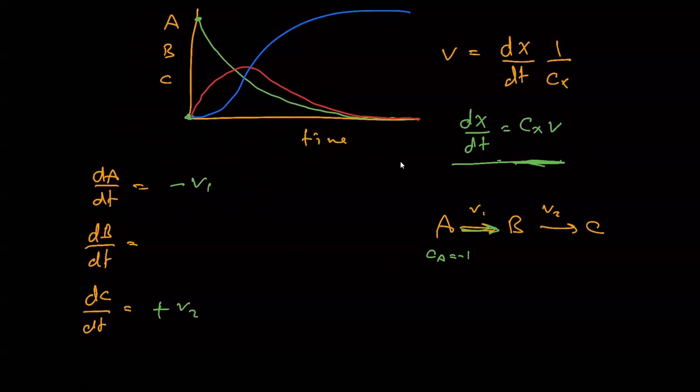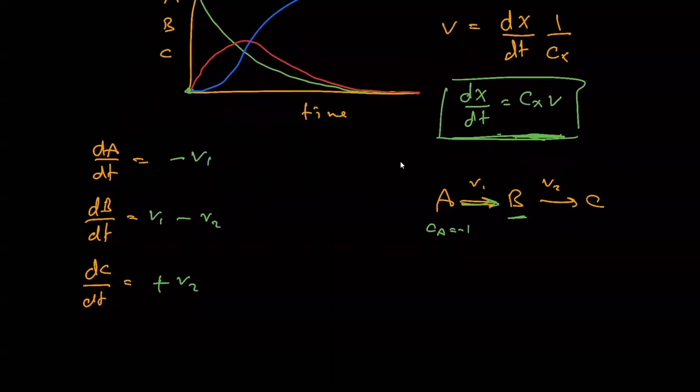What about B? This is where it gets more interesting. B is actually being made at a rate V1, and it's disappearing at a rate V2. You can get this equation by considering this as well, but it becomes second nature. After maybe a few seconds, you'll realize that it's quite straightforward to write the differential equations in terms of these rates for any network.